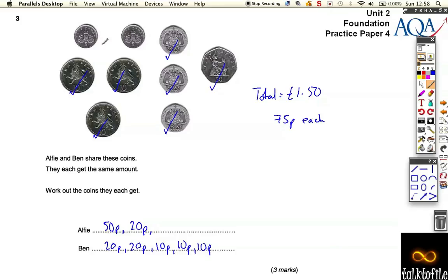And then we've just got these two coins left so we'll give one to Alfie and one to Ben. So there's a 5p and a 5p.